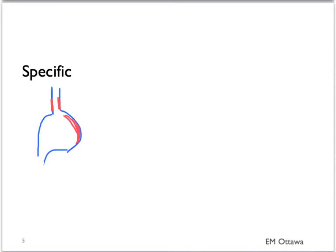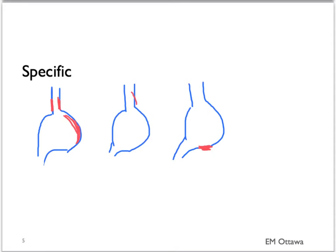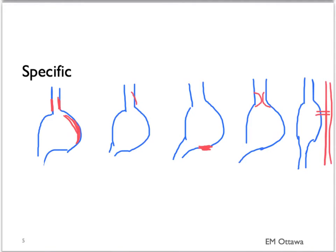As discussed before, upper GI bleed can be caused by a few specific causes. These include esophagitis and gastritis, Mallory-Weiss tears, peptic ulcer disease, esophageal varices or more rarely gastric varices, and the dreaded aortoenteric fistula. Let's look at the specific treatment for each cause.